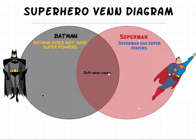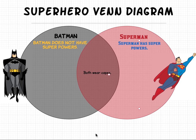This gray circle represents all things Batman, and this red circle represents all things Superman. This combination of the gray and red represents the things that Batman and Superman share. This is called comparing and contrasting — we are finding the similarities and differences between Batman and Superman.